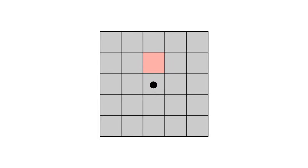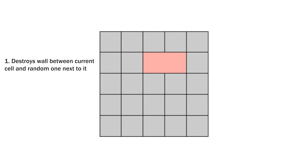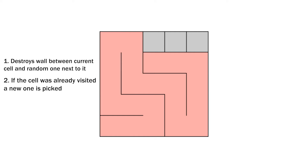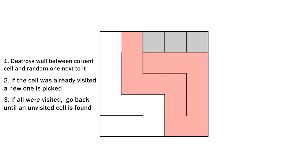The algorithm starts with all walls activated and picks a starting cell. Then it randomly chooses a neighboring cell and destroys the wall between the two cells. The new cell becomes the current cell and the next random neighbor is picked. If the cell hasn't been visited yet the wall is destroyed, but if it has, a new neighbor is picked. This process continues until we get to a cell where all neighbors have already been visited — and this is where the backtracking comes in. The algorithm remembers all the cells it has visited and starts going back until it gets to a cell with an unvisited neighbor. Following these simple rules, the algorithm keeps going until all cells have been visited and we have a randomly generated maze.